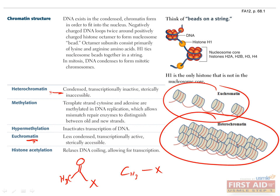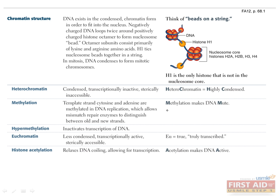I usually remember this difference between acetyl groups and methyl groups by thinking that acetyl groups are bigger and therefore push DNA away from histones, whereas methyl groups are smaller and allow them to stay close together. You can also use the mnemonic shown here, which is that methylation makes DNA mute, and acetylation makes DNA active.